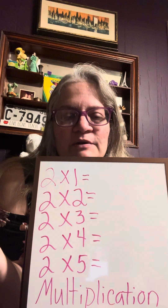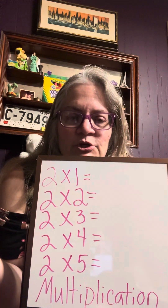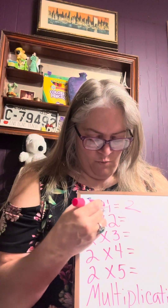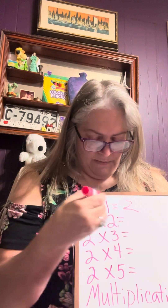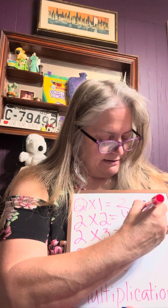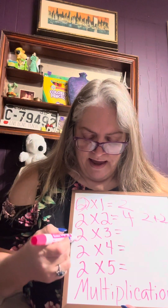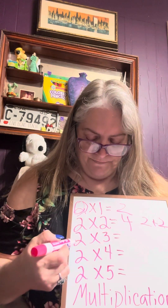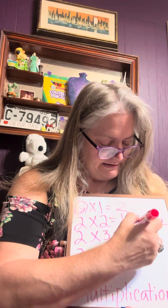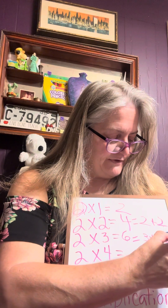This is multiplication of twos. We already talked about multiplying by one — that equals that number, so three times one is three. Two times one is two. Two times two is four — we have two twos, so that's the same as two plus two equals four. Two times three is six — we have two threes, which is the same as three plus three equals six.